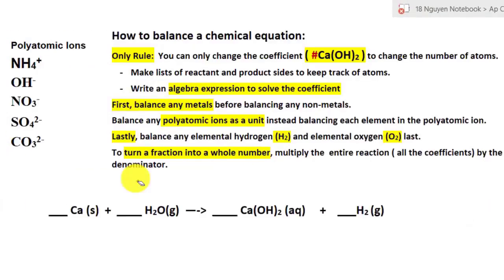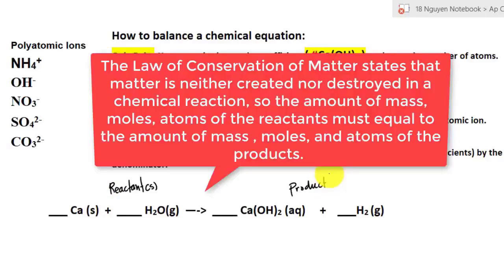For any chemical reaction, you already know that the reactants combine together to make the product. And all chemical reactions follow this law — the law of conservation of matter. Basically, the amount that you put in on the reactant side must equal the amount on the product side.